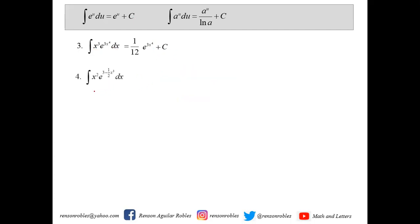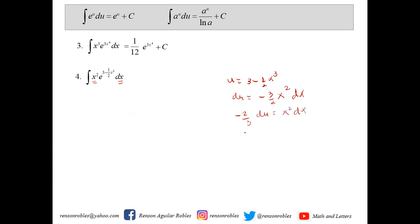We have the integral of x squared times e raised to 3 minus 1 half x cubed. If we let u be equal to 3 minus 1 half x cubed, then du is negative 3 halves x squared dx. We only have x squared dx here, so we get the reciprocal and multiply it to du, giving negative 2 thirds du equals x squared dx. We now have negative 2 thirds, then copy e raised to 3 minus 1 half x cubed, and add c at the end.